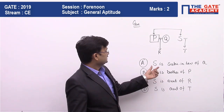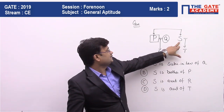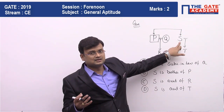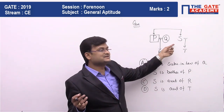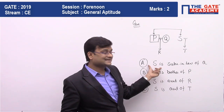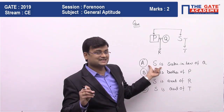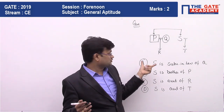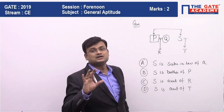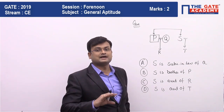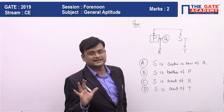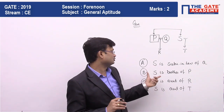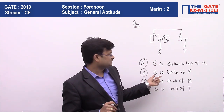For Statement 1, S is sister-in-law of Q — we do not know the gender of S, so we cannot say whether S will be sister-in-law or brother-in-law. But at the same time, we cannot say this statement is definitely false — it can be true also. So this statement might be true or might be false; we are not sure.